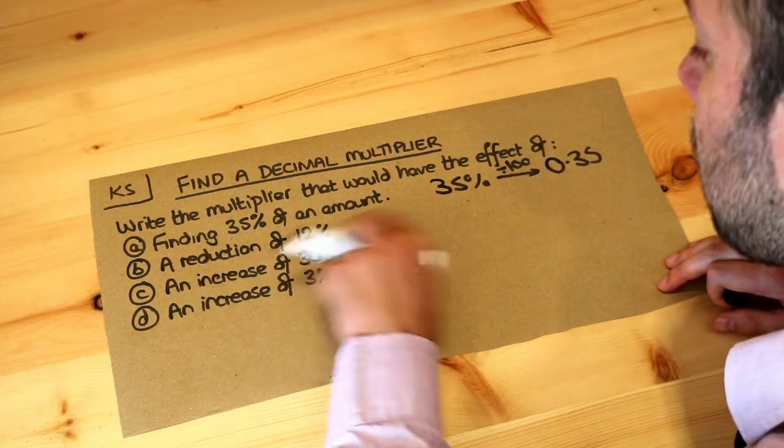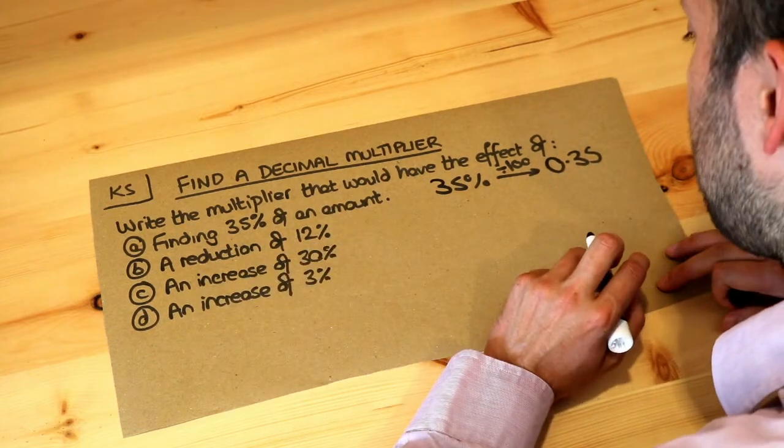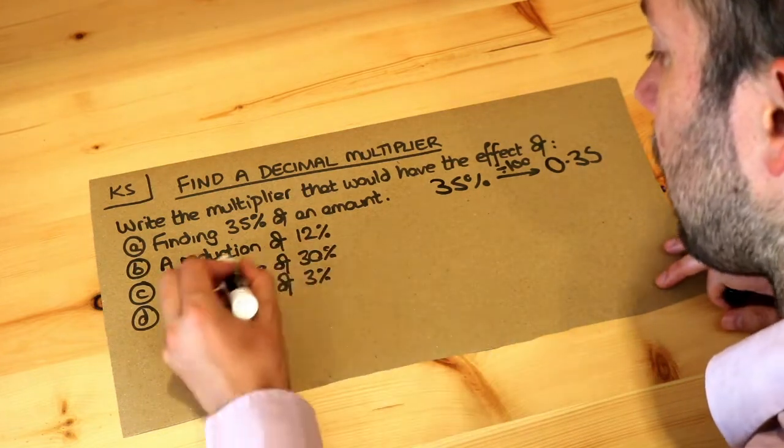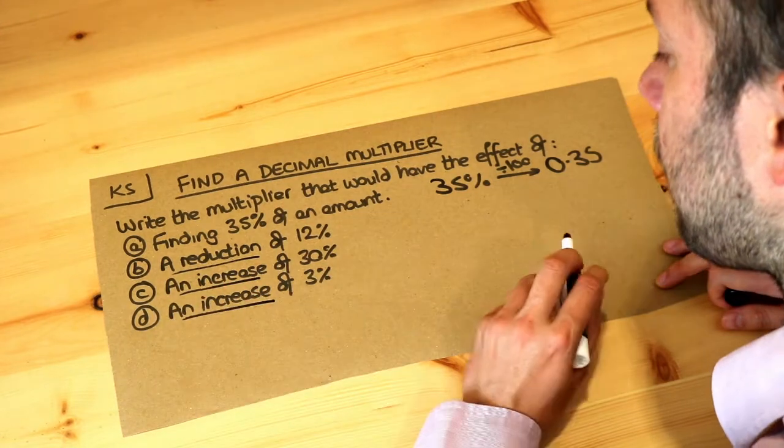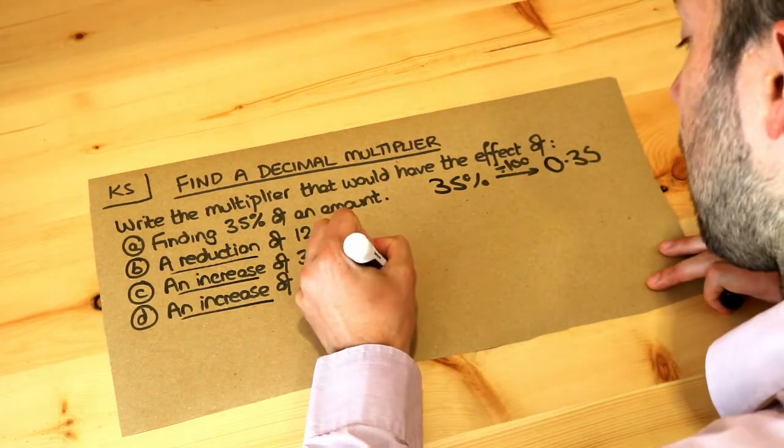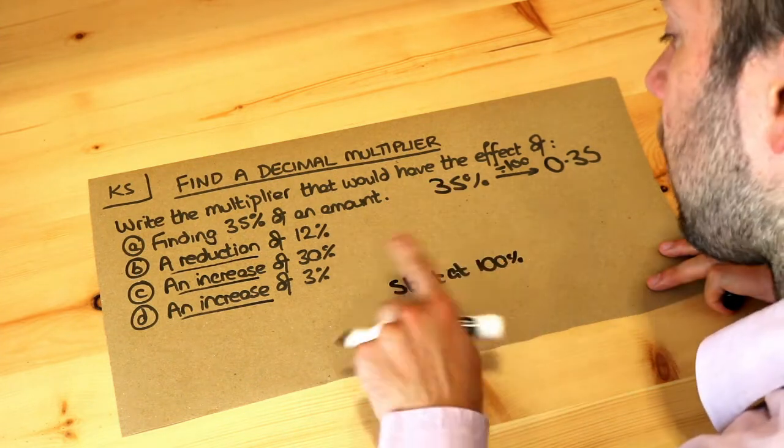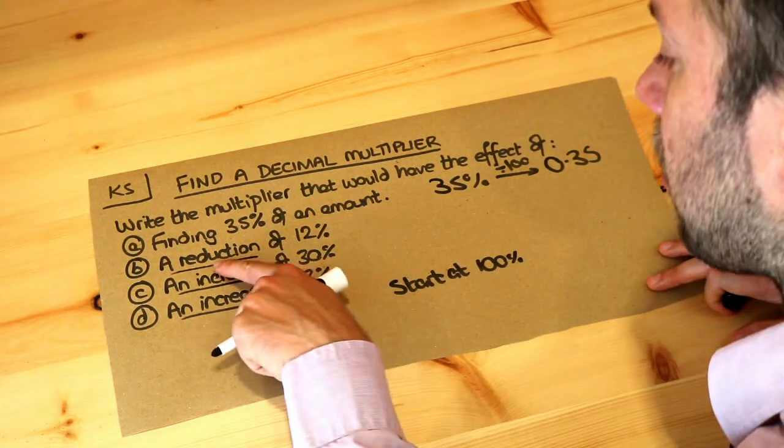How do we represent a reduction of 12% using a decimal multiplier? Well if you either have an increase or a decrease, so this one, this one and this one, then you always start at 100%. So the value starts at 100%.